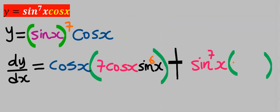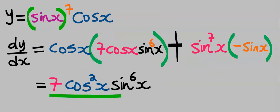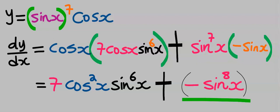Hence I'm going to have minus sine x. Next this will multiply this and we have seven cos squared x sine six x. Next sine seven x will multiply minus sine x and here we're going to have minus sine eight x.